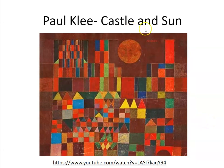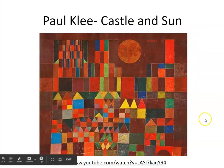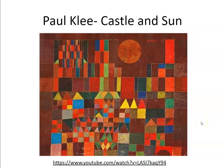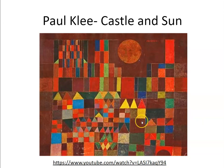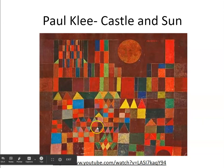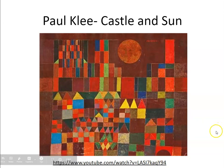This one here is called the Castle and the Sun. You can see there's a lot more shapes — it's much more complicated than the previous examples — but it's the exact same technique. It's the same building up of these different areas by combining all of these shapes together.